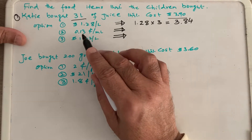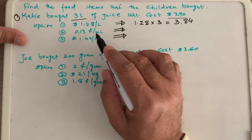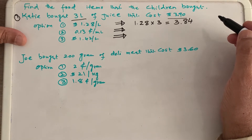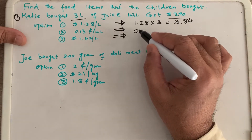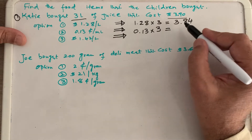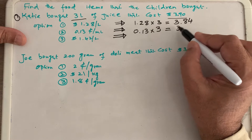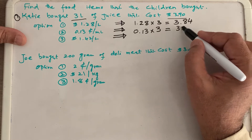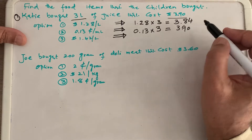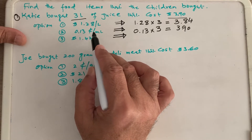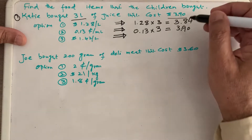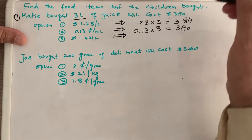Now we check Option 2: 13 cents per milliliter. We have to convert cents into dollars and milliliters into liters, then find the cost of 3 liters. The cost of 3 liters comes out as $3.90 because when we convert 13 cents per milliliter into dollars per liter, this cost equals $3.90 — which is exactly what is required. So this option is going to be correct.